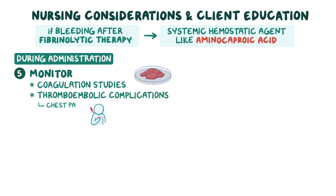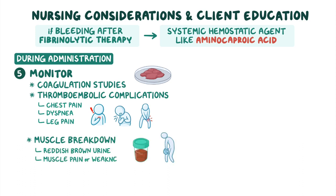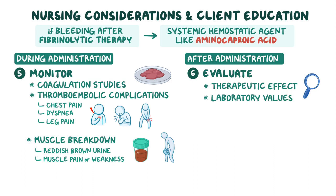During administration of aminocaproic acid, closely monitor the client's coagulation studies and observe for signs of thromboembolic complications such as chest pain, dyspnea, or leg pain. Also monitor for signs of muscle breakdown such as reddish-brown urine and client reports of muscle pain or weakness. After administration, evaluate for therapeutic effect: controlled bleeding, laboratory values within normal limits, and the absence of side effects.